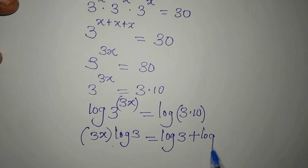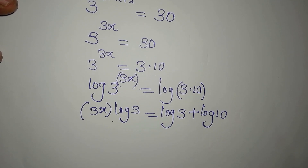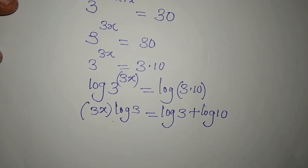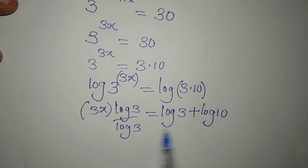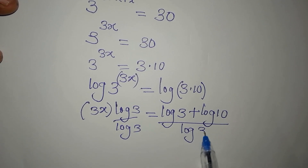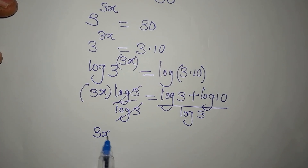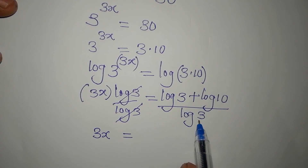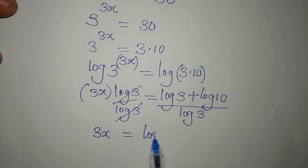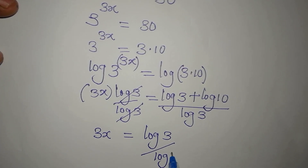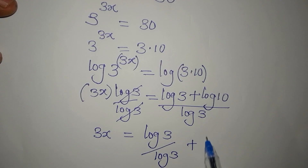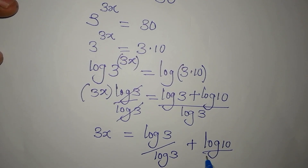We want to get the value of x. To do that, I'll divide everything by log 3. So 3x equals log 3 over log 3 plus log 10 over log 3.